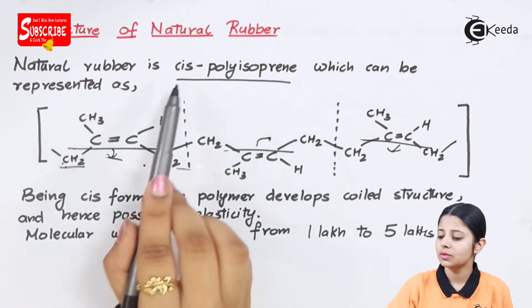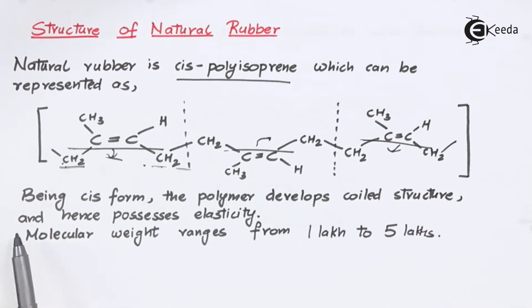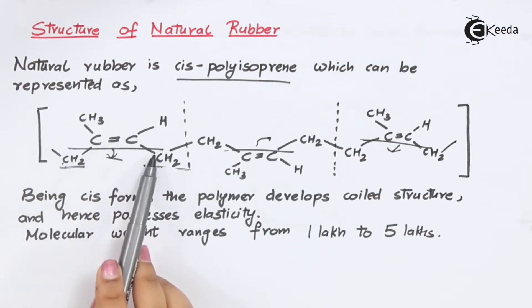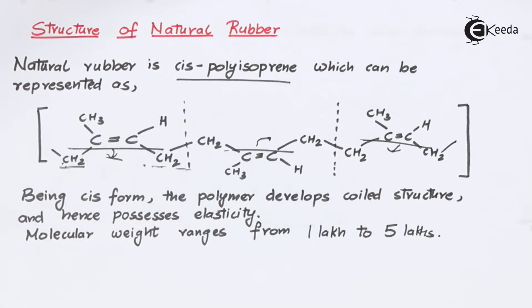This is cis polyisoprene. Being in the cis form, the polymer develops a coiled structure and hence possesses elasticity. Rubber is always elastic because all the bonds are in a coiled structure. When you try to pull it, it stretches like a spring. The molecular weight of natural rubber ranges from 1 lakh to 5 lakhs.